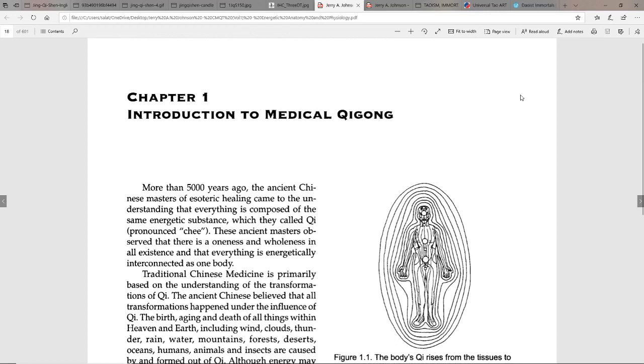It's a very deep subject to say the least, so I just want to go over one of the most basic concepts with you. As this says, more than 5,000 years ago the ancient Chinese masters of esoteric healing came to the understanding that everything is composed of the same energetic substance which they call qi.